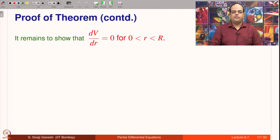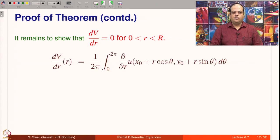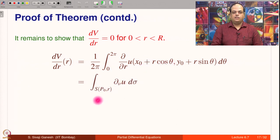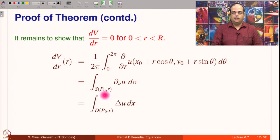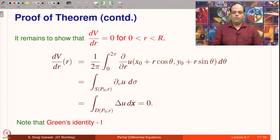It remains to show that dV/dr = 0. Computing dV/dr: taking differentiation inside the integral is allowed because U is a smooth C² function. The result is the normal derivative of U on the circle. By Green's first identity, this equals the integral over the disc of Laplacian U dx, and that is 0 because U is a harmonic function. We used Green's identity in passing from one expression to the other, and harmonicity of U in concluding the integrand is 0.